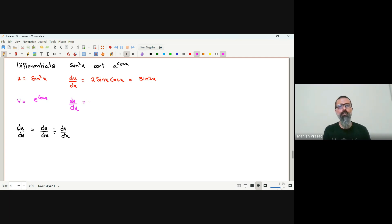अब यहां आप 2 sin x cos x में भी छोड़ सकते हैं, v हो जाएगा, e का तो e ही रहेगा, cos x का हो जाएगा minus sin x.